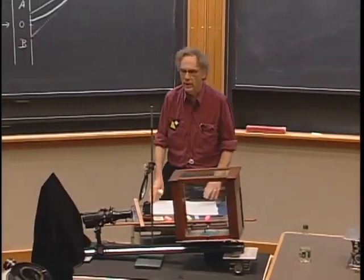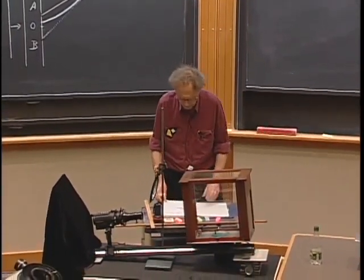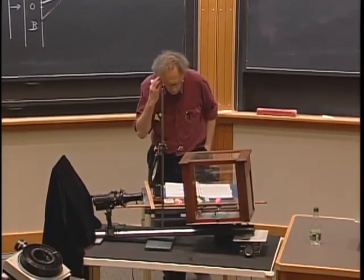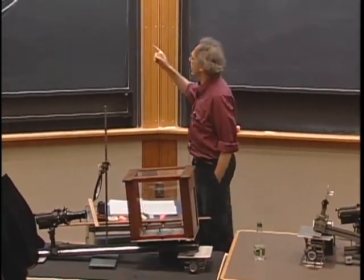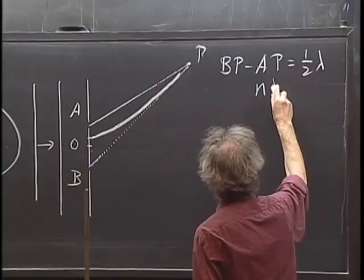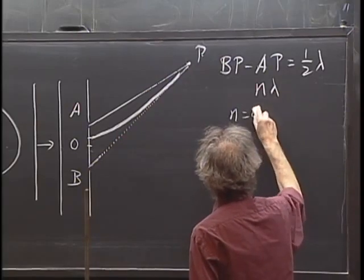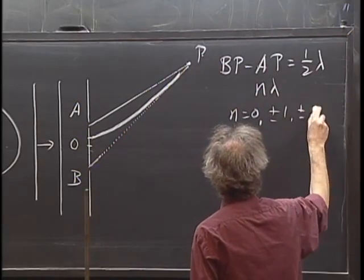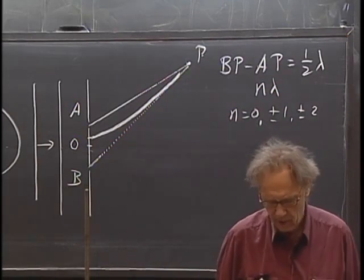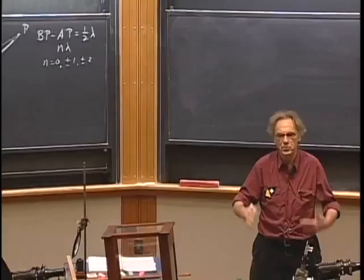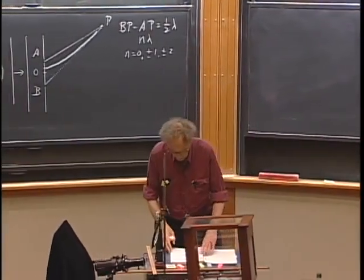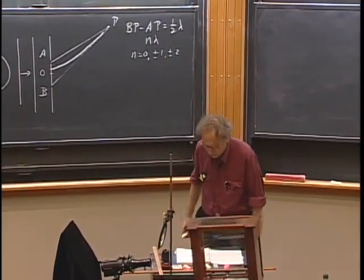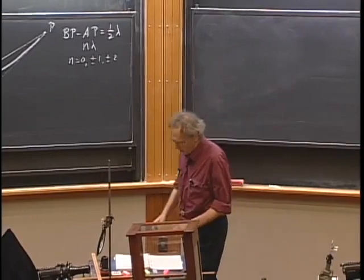Remember from high school: if the sum of distances AP and BP is constant, you get an ellipse; if the difference is constant, you get a hyperbola. So you get a hyperboloidal surface where BP minus AP equals one half lambda, giving destructive interference — light plus light gives darkness. Tomatoes don't do that. One tomato on top of another does not give no tomato. There are also hyperboloidal surfaces for constructive interference, where the path difference is n times lambda, with n equal to zero or plus or minus one or two, giving phase differences of zero, 2π, 4π.